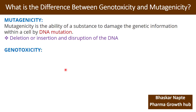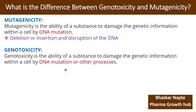Now let us understand what is meant by genotoxicity. Genotoxicity is the ability of a substance to damage the genetic information within a cell by DNA mutation or other processes. The key difference is that genotoxicity is also related to other processes which can damage genetic information within a cell, whereas mutagenicity is only and only associated with DNA mutation.